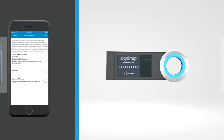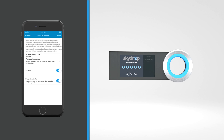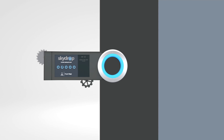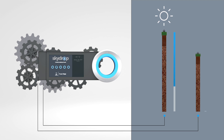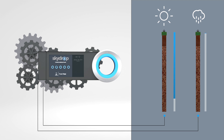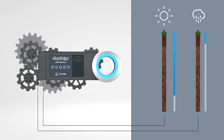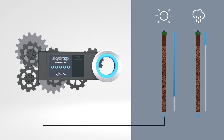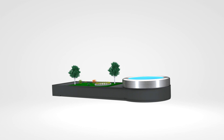Although the SkyDrop controller is totally customizable, by enabling smart watering and dynamic minutes, you can take full advantage of SkyDrop's intelligent algorithms. These algorithms automatically adjust your watering schedule and duration based on your local weather data, saving water and increasing the health of your landscape.